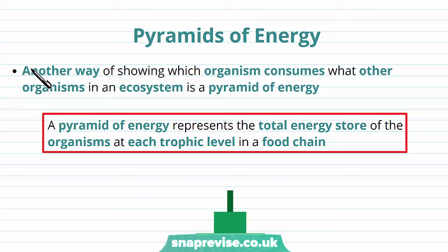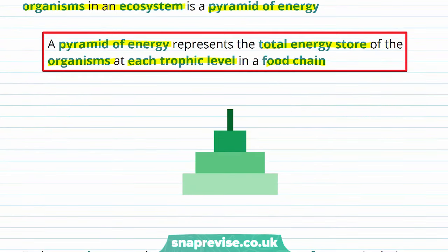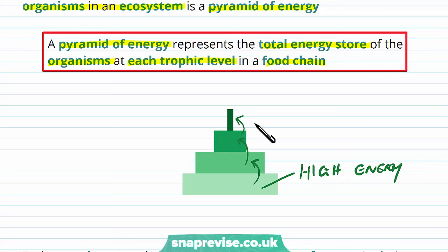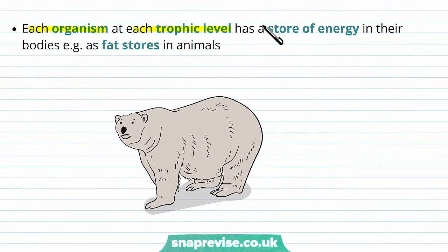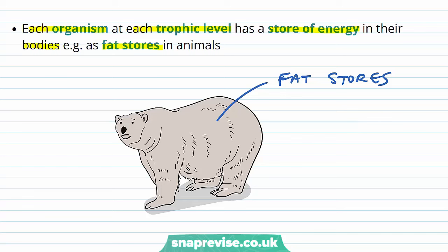Finally, we can also have pyramids of energy. A pyramid of energy represents the total energy store of the organisms at each trophic level in a food chain — the amount of energy available for the next level. There's high energy in the first level, then less and less at each subsequent level. It shows us what energy is available, not just biomass, because some biomass can't be eaten or may not be high in energy. Every organism at each trophic level has a particular store of energy — for example, fat stores in animals like bears, which can be eaten by other animals and used as energy. Plants also store energy in their bodies.